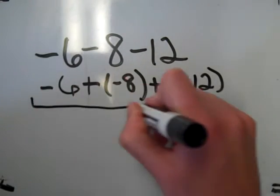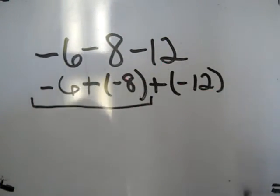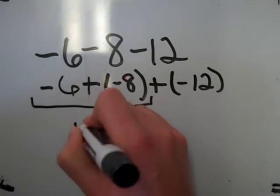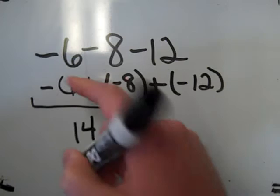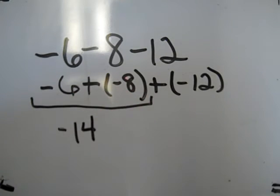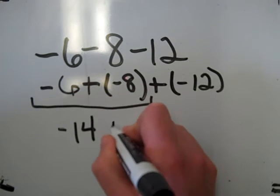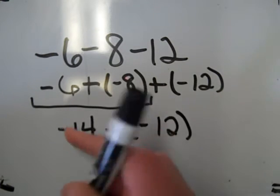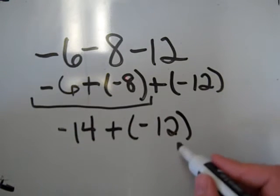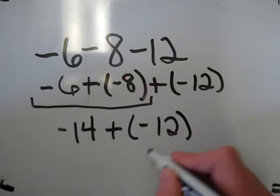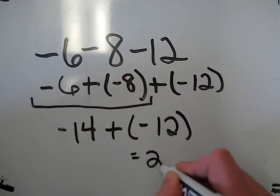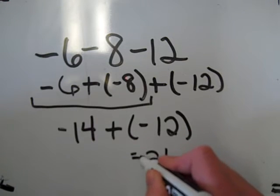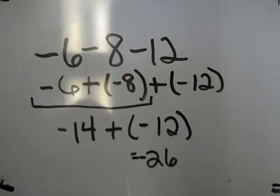Negative 6 and negative 8 have the same sign so I add them: 6 plus 8 is 14. Since the sign on the addends is negative, the sign on the answer is going to be negative. So I have negative 14 plus negative 12. Again, they're both negative — the signs are the same so I add them. 14 plus 12 is 26, and since the signs on the addends are both negative, the answer will be negative 26.